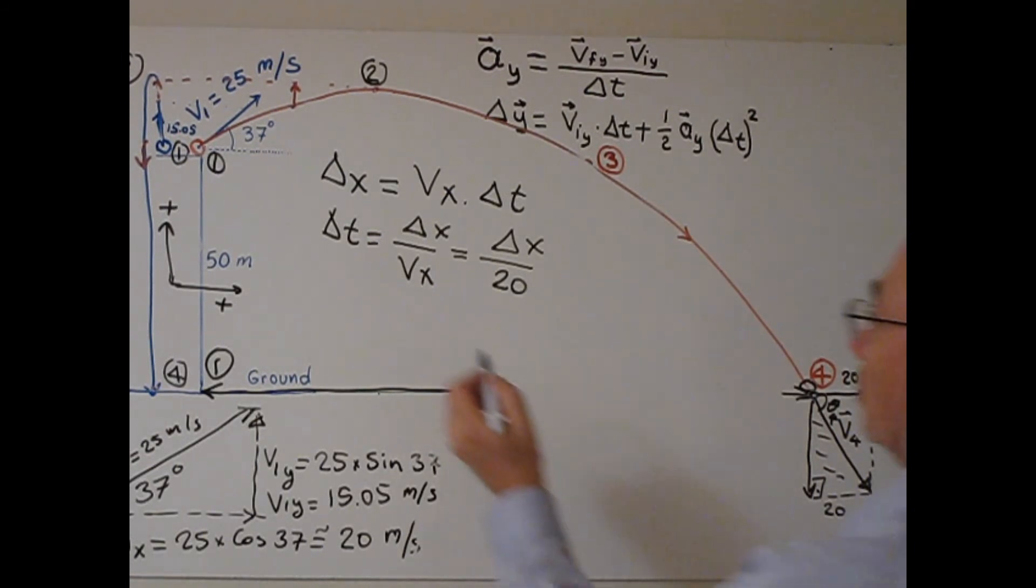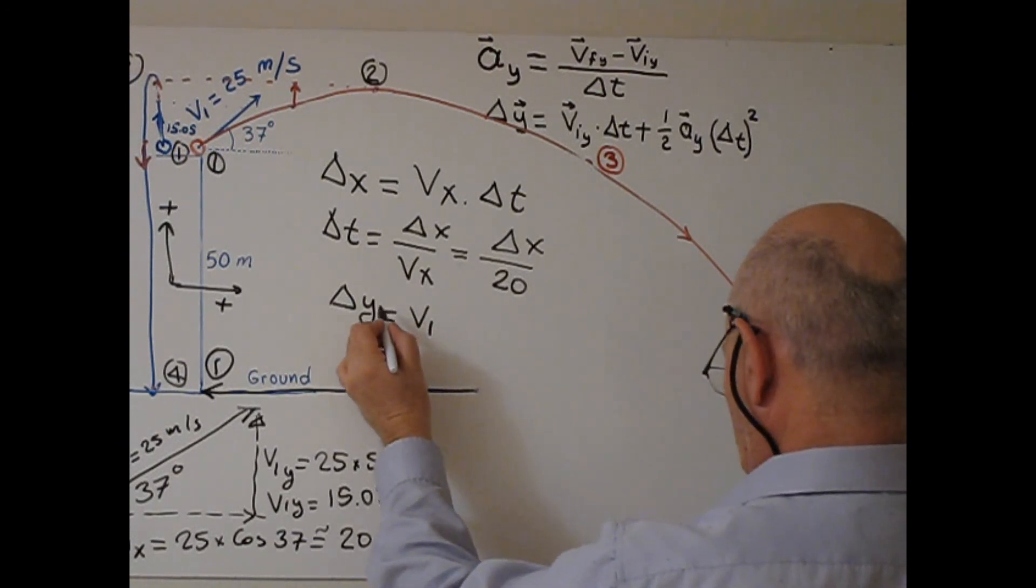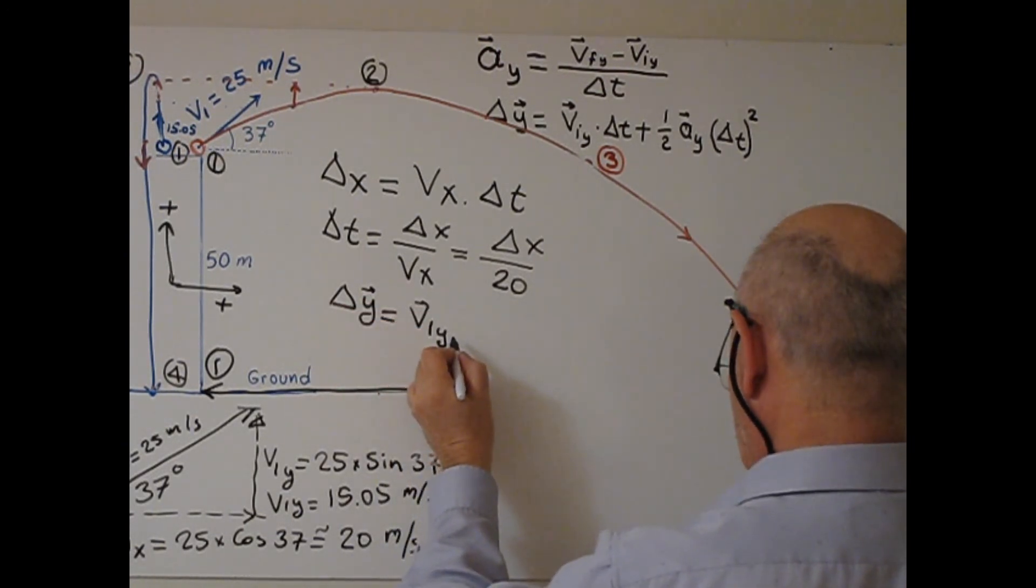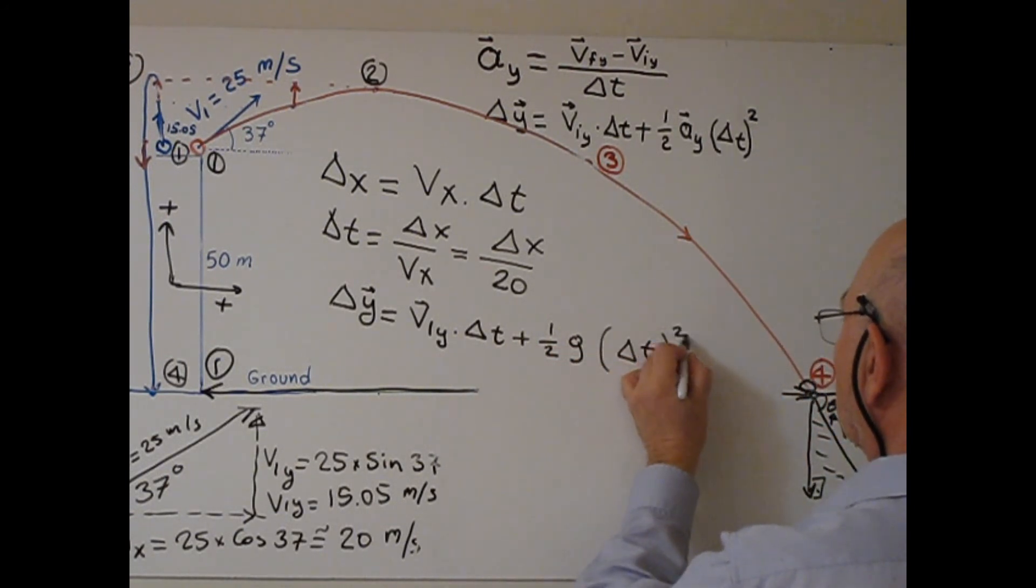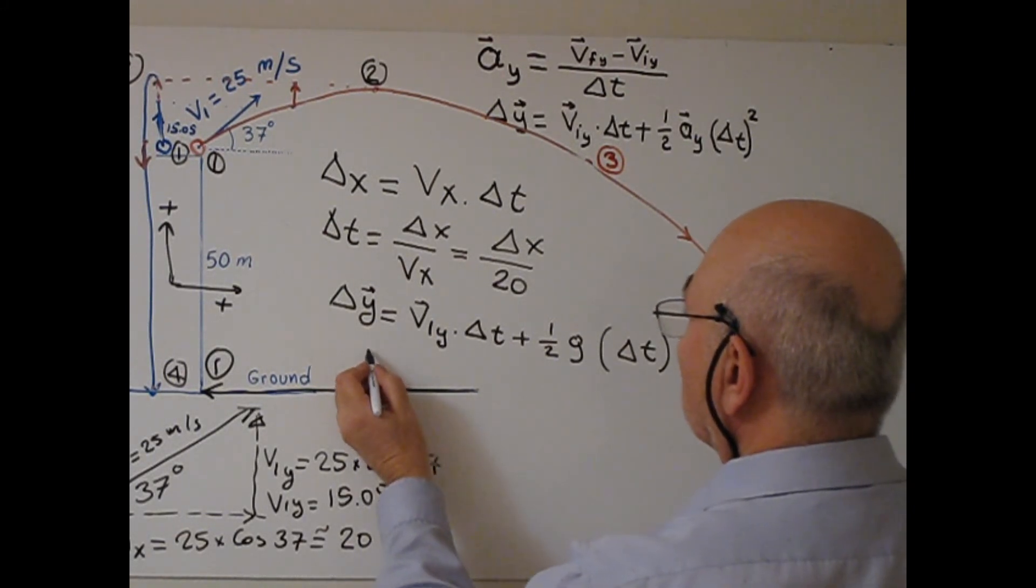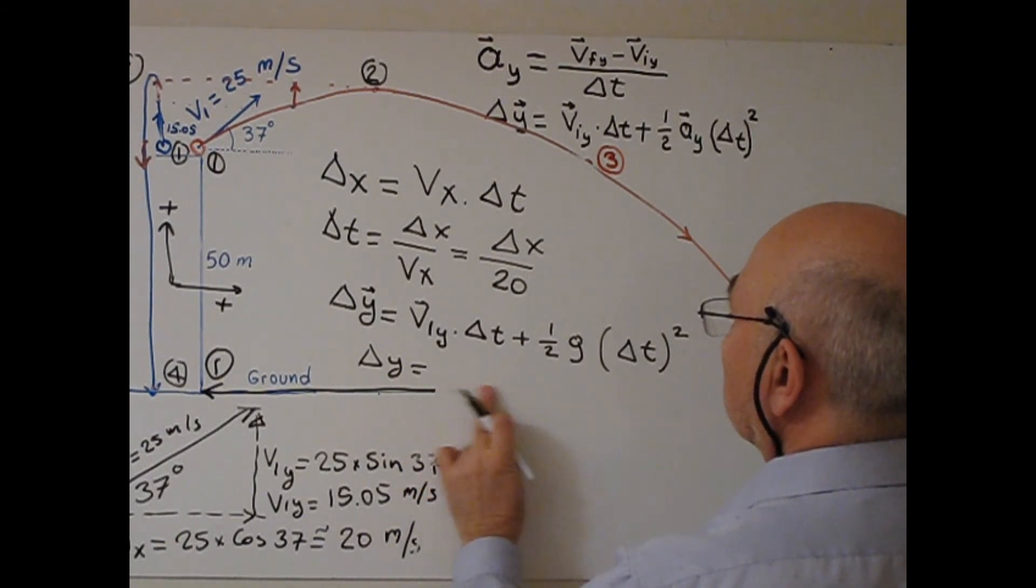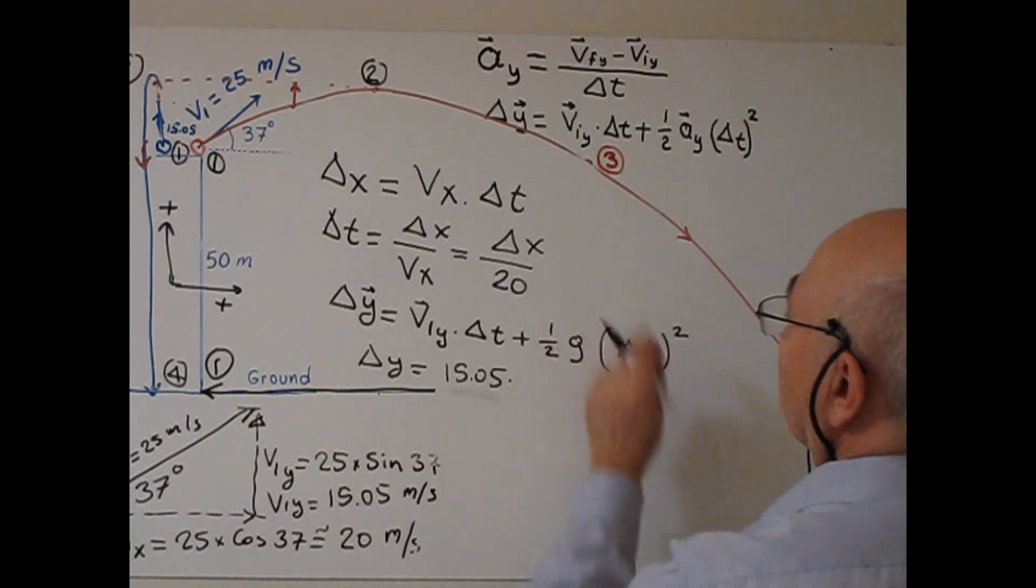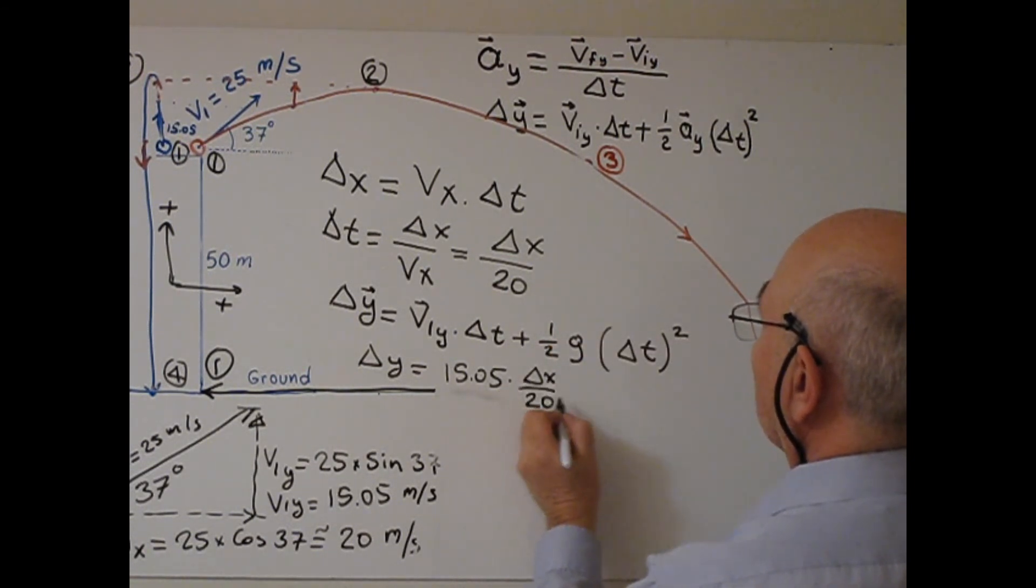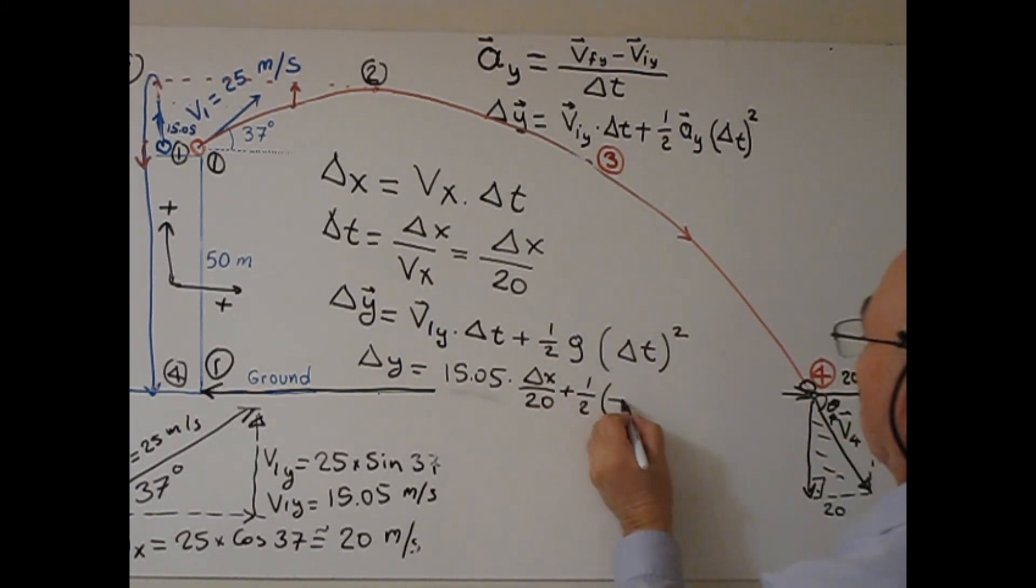Delta y will be, with this formula, v1y times delta t plus one-half g times delta t squared. So delta y will be v1y, which is the vertical component of initial velocity, 15.05, positive. Delta t I replace with delta x over 20 plus one-half times negative 9.8 times delta x over 20 squared.